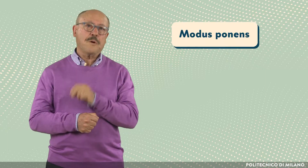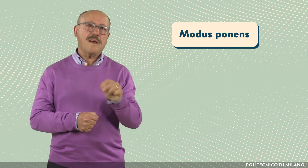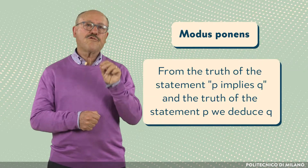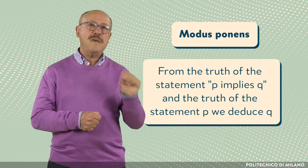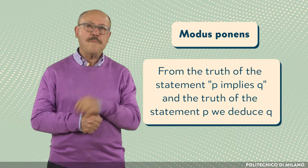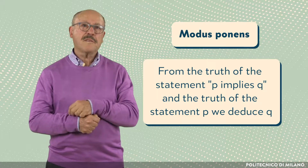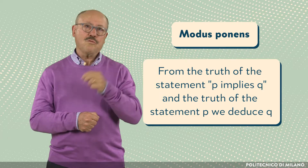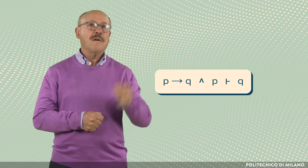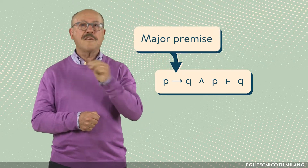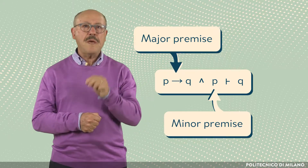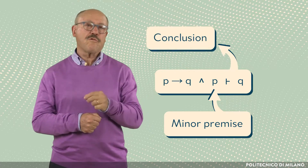Let us examine a typical deductive inference rule called modus ponens. The rule can be described as follows: from the truth of the statement 'p implies q' (major premise), and the truth of the statement p (minor premise), we deduce q. Formally, this can be expressed in mathematical logic as: from the truth of 'p implies q' and the truth of p, we can deduce the truth of q.